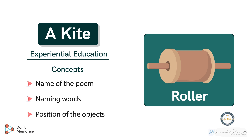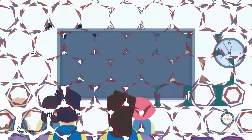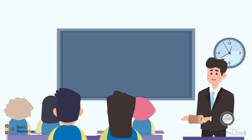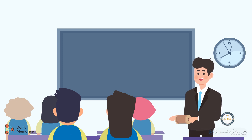To make it interesting, we will enter the class by rotating the roller. This will help grab the students' attention as they focus on the activity of flying a kite. After this, we shall initiate a discussion by asking a few questions which will eventually lead to building the name of the poem.